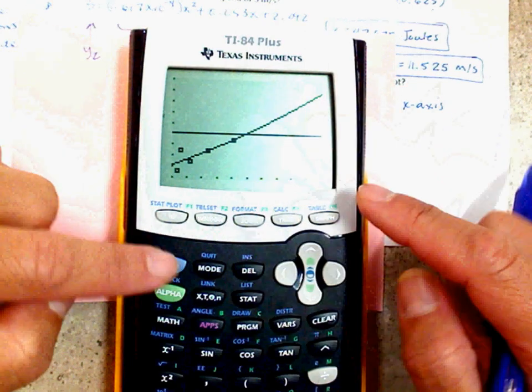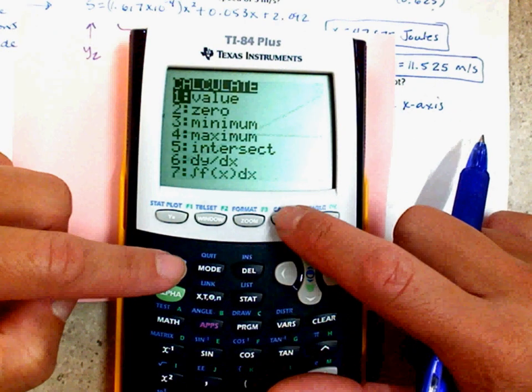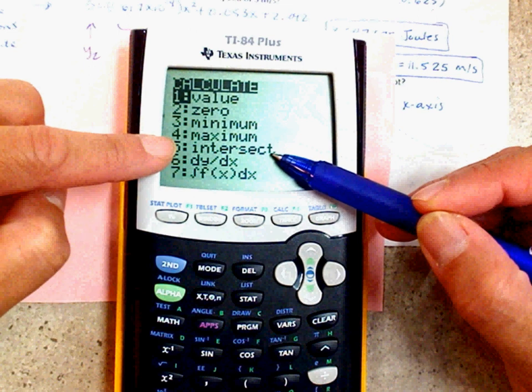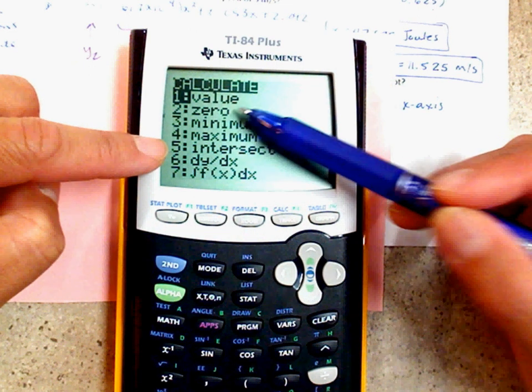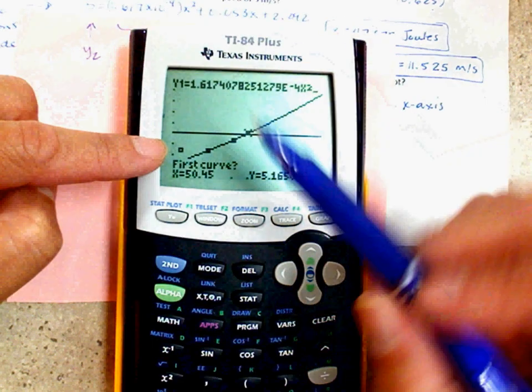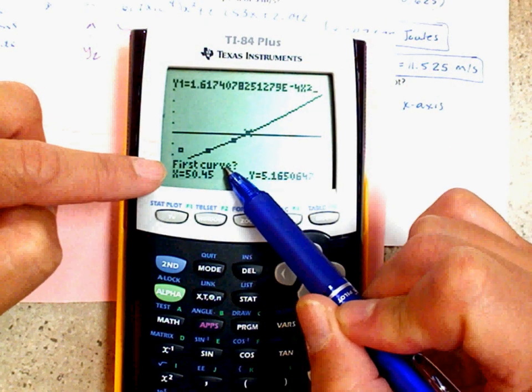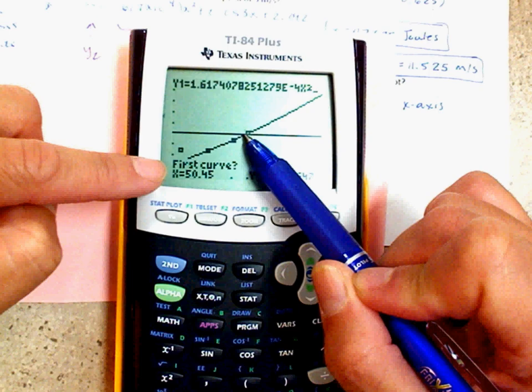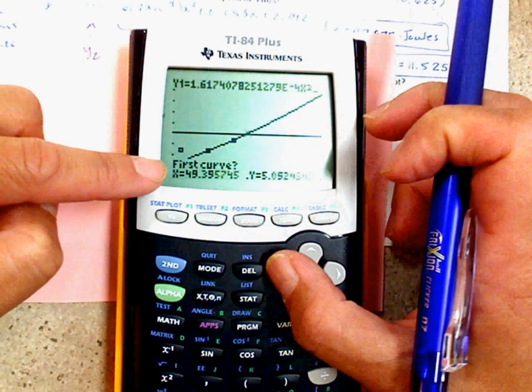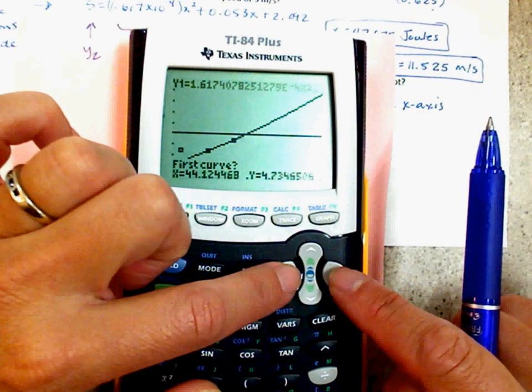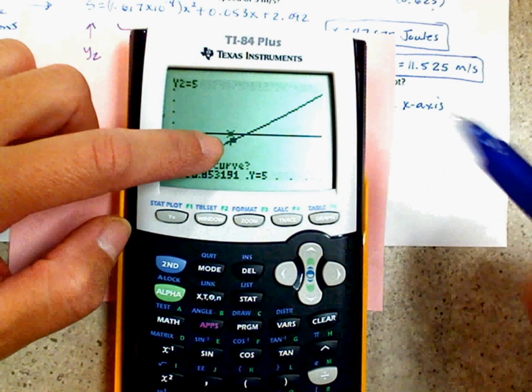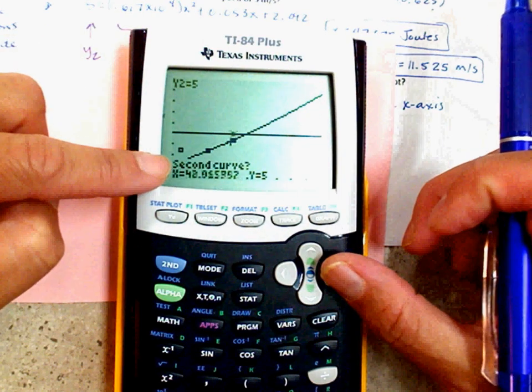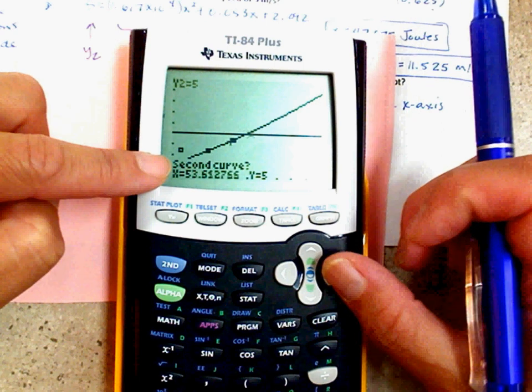See where it says calculate? Second calculate. Oh, look at that word right there. Intersect. There's your X. There's your X intercept. There's 5. You see where it says first curve? That's your left boundary. I want to be left of this curve. Do not use up and down. Use left and right. See my cursor? Anywhere to the left. Second curve. Anywhere to the right of where they cross. See that? Inter.